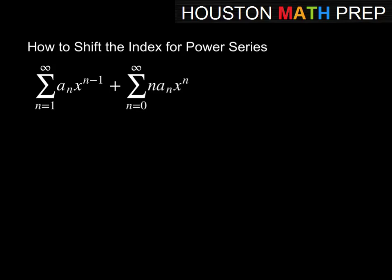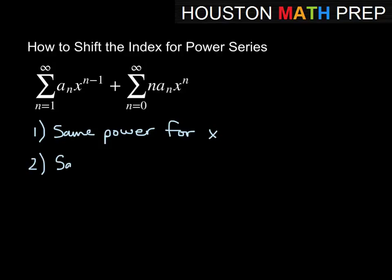Here we're going to look at how to shift the index for power series. This is generally done when we want to combine two power series, but for whatever reason the indices start at a different number. So here you can see we have two power series - one of them starts at n equals 1, one starts at n equal to 0. The idea is that we want to do two things in order to combine the power series nicely: we want the same power of x, and we also need the same starting index.